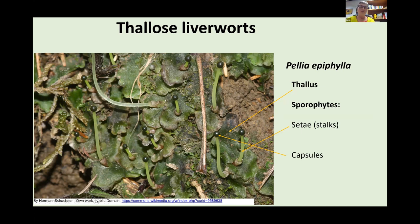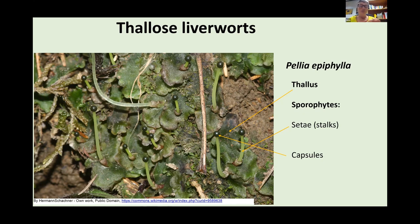Thalloid liverworts don't have separate leaves and stem — they just have one plate of tissue that photosynthesises and constitutes the whole plant. You can see from this picture of Pellia that the green flat thalli are the gametophyte. In this picture you can also see the sporophytes — the sporophytes have a see-through stalk called a seta, and then the little black spherical structure is the capsule, which contains the spores.